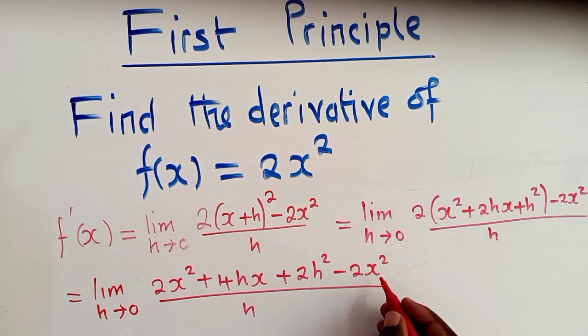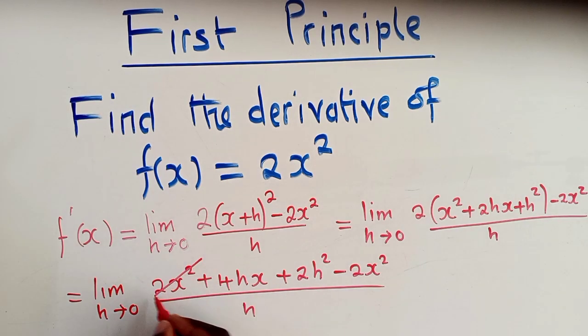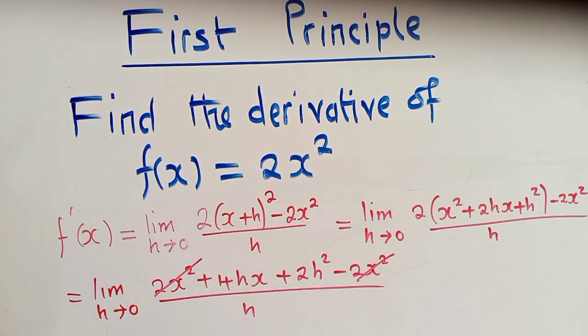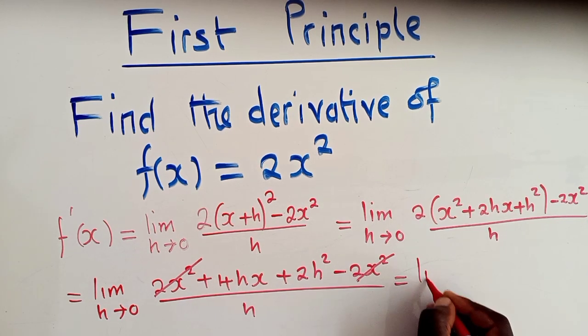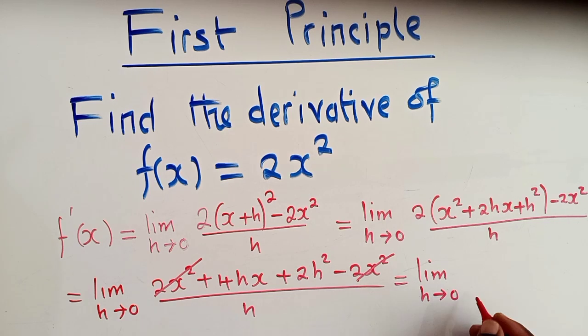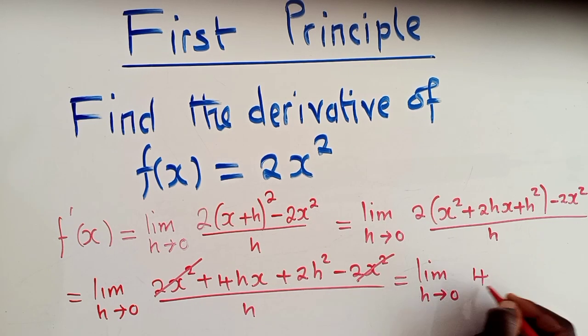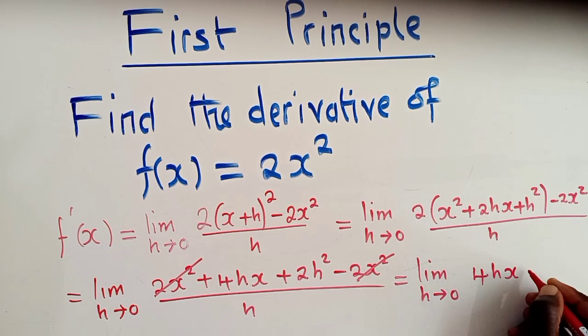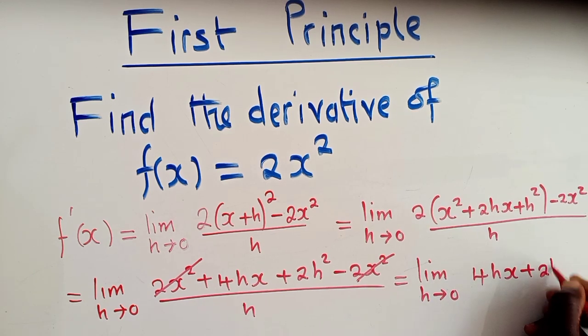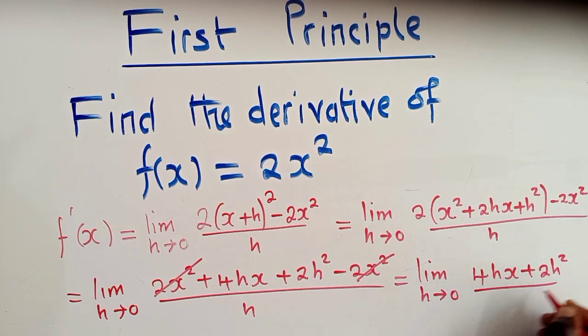Now from this stage, if you can see nicely, this and this will cancel. Because here it's negative and this is positive. So they will cancel. So we shall remain with a limit as h approaches 0. We have 4hx plus 2h² over h.